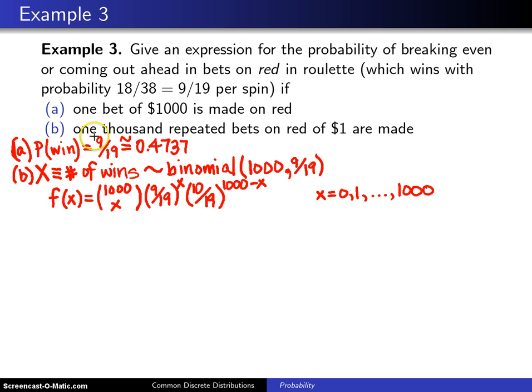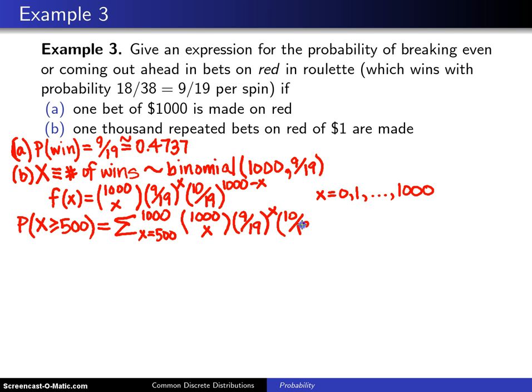We want the probability of breaking even or coming out ahead. And that is the same as the probability of getting 500 or more successes in those 1,000 Bernoulli trials. In that case, you're breaking even or coming out ahead. So we want to sum up the probability mass function from 500 to 1,000. And so, we want to calculate this.